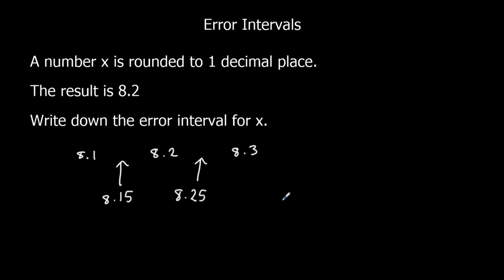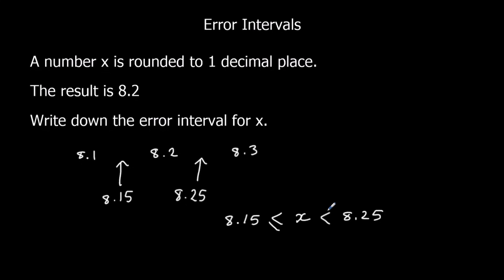Now we want to write this using inequality notation, so we're going to have our number x in the middle. Our lower bound is 8.15 and our upper bound is 8.25. So x is bigger than or equal to 8.15 — because 8.15 does round to 8.2 to one decimal place — but x is less than 8.25. It can go all the way up to 8.2499, but we can't go all the way to 8.25 because that would round to 8.3. So it can equal the lower bound, but it can't equal the upper bound — it's just less than the upper bound.